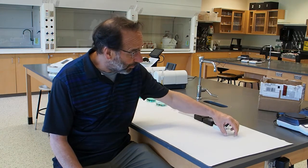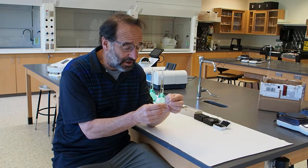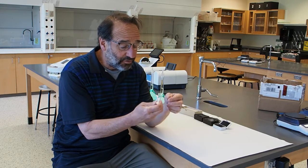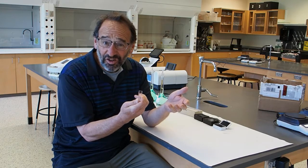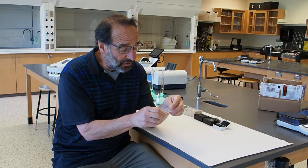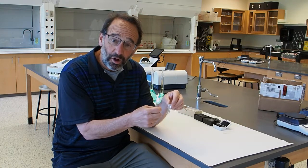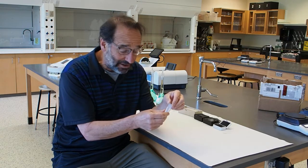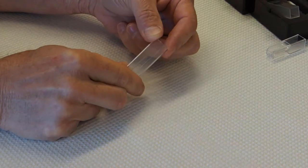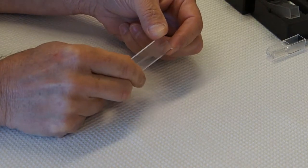And the one we'll be using today is this kind here, which is a plastic cuvette. And these are really inexpensive, maybe 20 cents each. And the key is that they've got flat, very transparent walls through which the light can pass. So this cell has four clear, transparent sides.